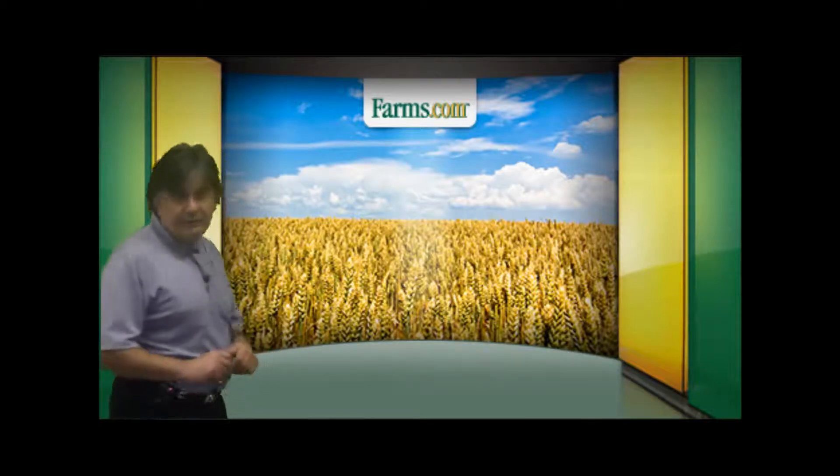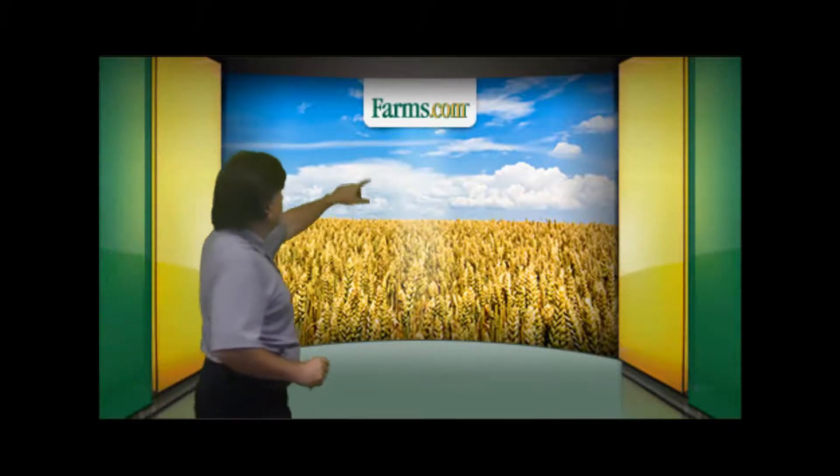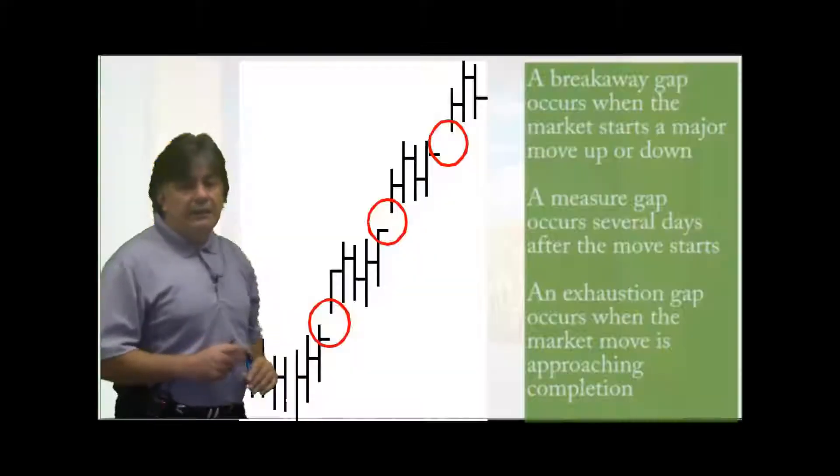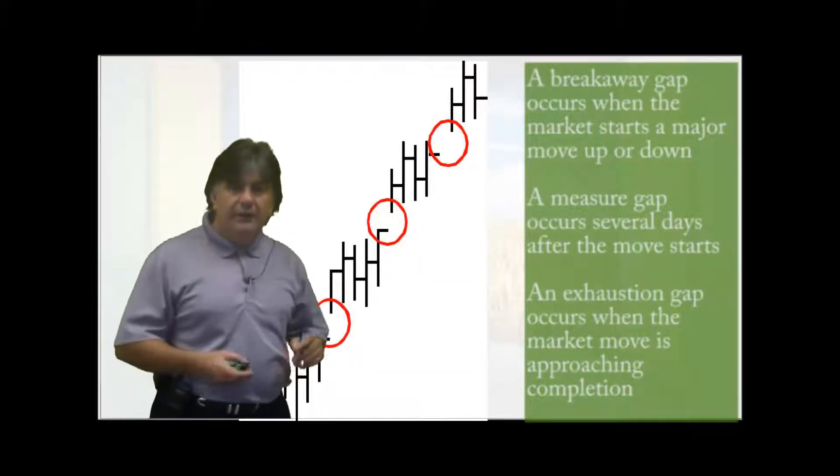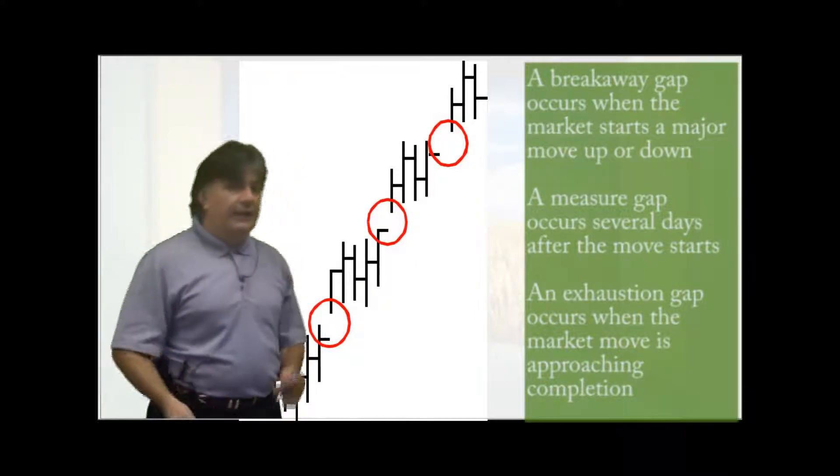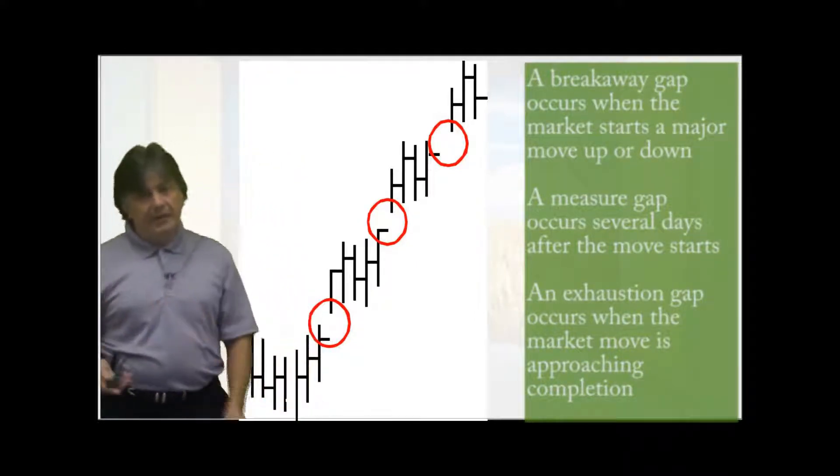So let's give you an example of a chart gap. Here's the December 2011 Corn Daily Futures Chart and you can see that chart gap there. There was some news that came out from the USDA that was a surprise to everyone and all of a sudden you get a gap to the downside. It can either be to the downside or it can be to the upside.